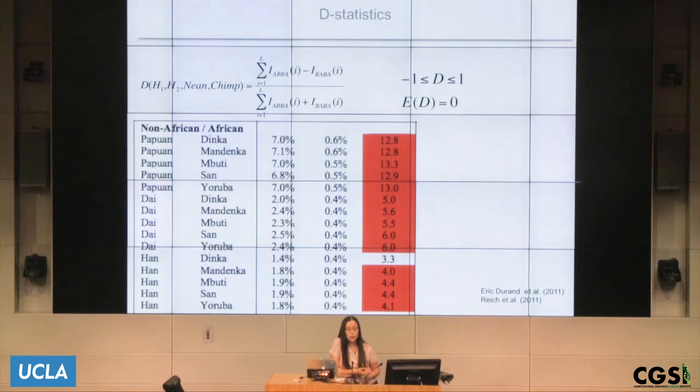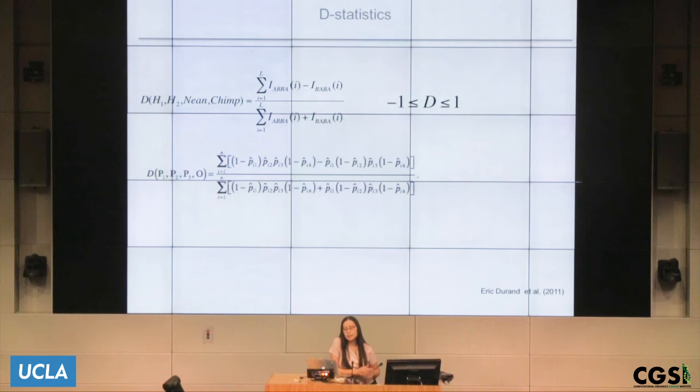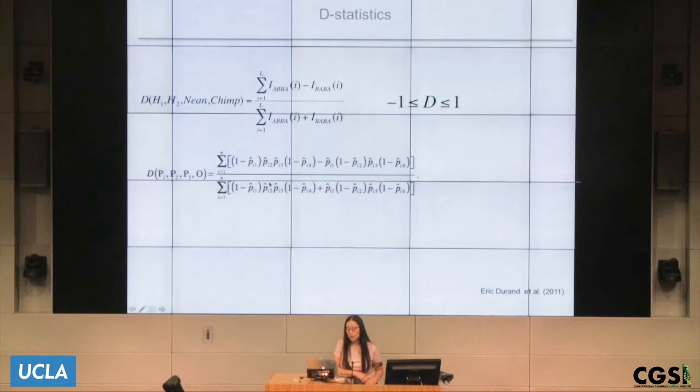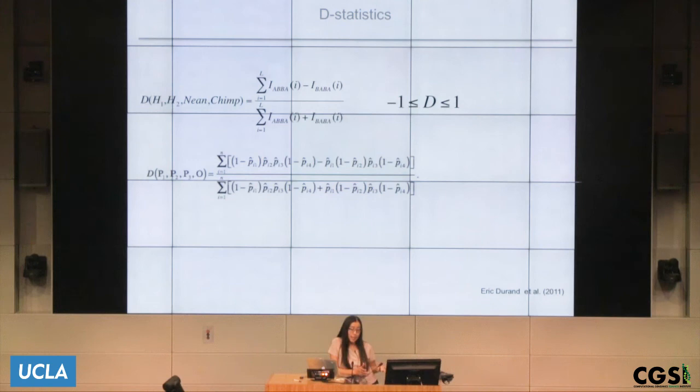Initially, these statistics were computed looking at one haplotype at a time from each individual. But you can also use the frequencies in the sample — this is just another way to write the D-statistic as a function of frequencies in the sample. These statistics are good for detecting, but not for quantifying, archaic introgression.